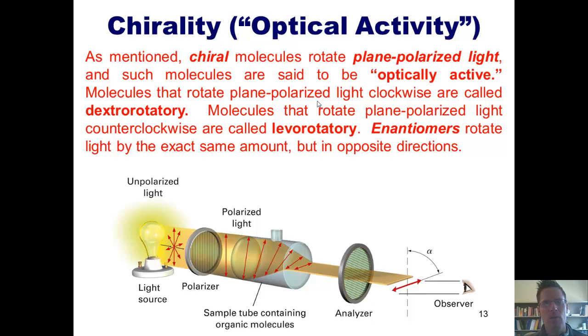Now as mentioned, chiral molecules rotate plane polarized light, and such molecules are said to be optically active. Molecules that rotate plane polarized light clockwise are called dextrorotatory. Molecules that rotate plane polarized light counterclockwise are called levorotatory. Now what you should know is that, once again, every single molecule in the universe that has a tetrahedral stereocenter is a chiral molecule. That is, if I put it into a polarimeter and fire plane polarized light at it in solution, it will actually bend or rotate the light in one direction or the other.